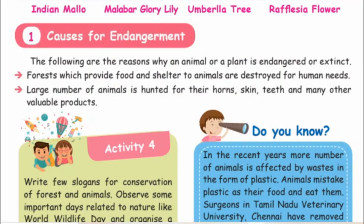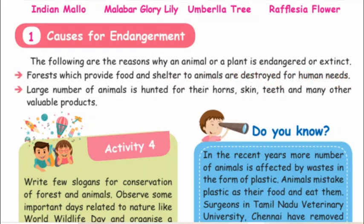Now let's look at the causes for endangerment. The following are the reasons why an animal or a plant becomes endangered or extinct. Forests which provide food and shelter to animals are destroyed for human needs. Also, a large number of animals are hunted for their horns, skin, teeth, and many other valuable products.